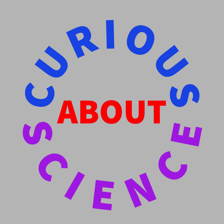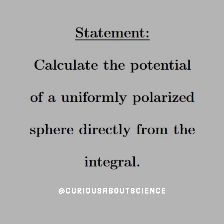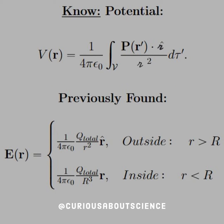Welcome back. Our statement today reads: calculate the potential of a uniform polarized sphere directly from the integral formulation. Things to know for this problem: the potential in the integral formulation is V(R) = 1/(4π ε₀) times the volume integral of the polarization P dotted with the separation unit vector.